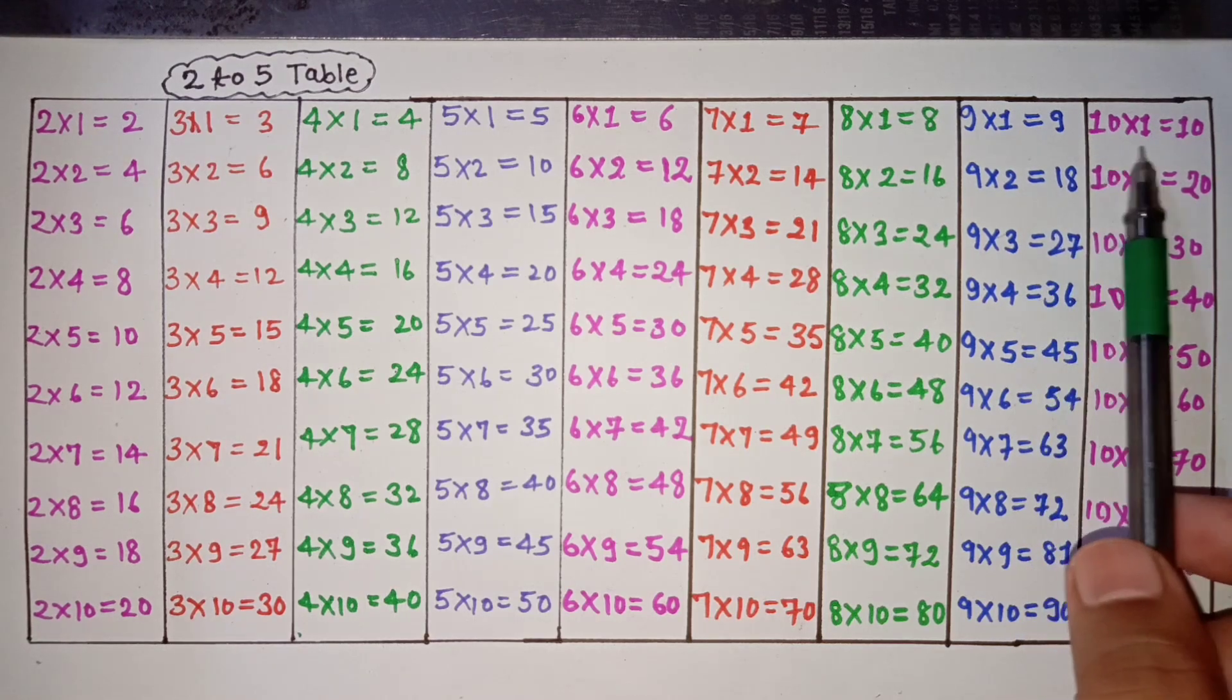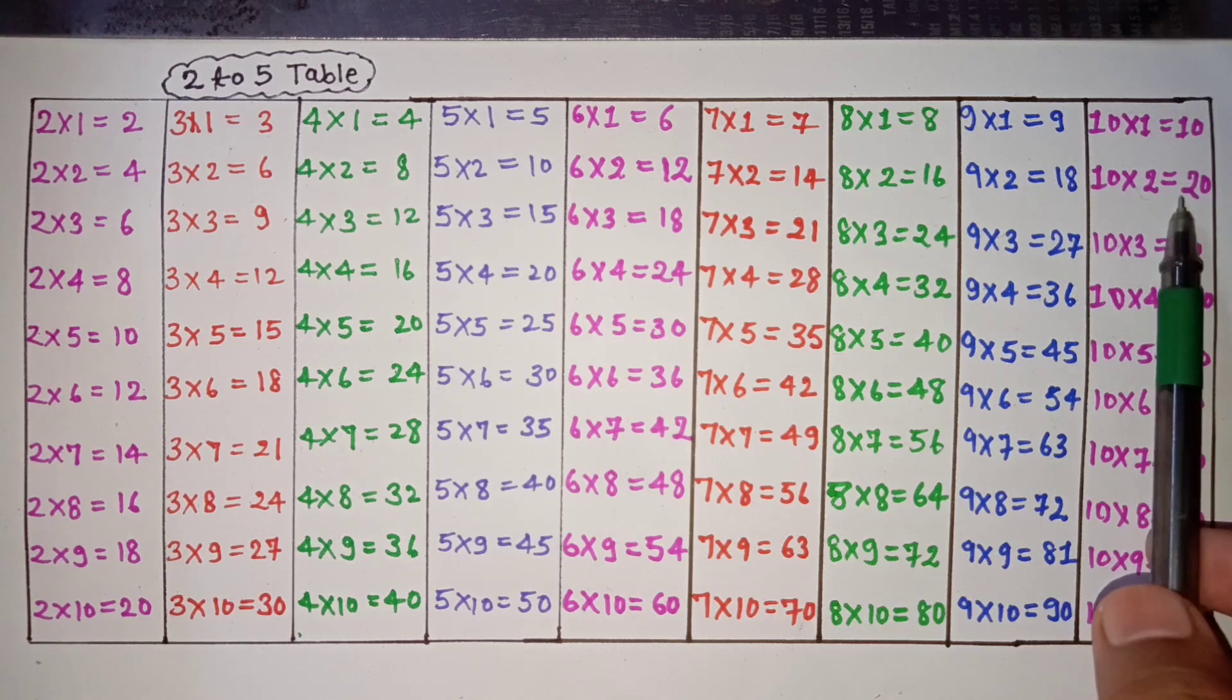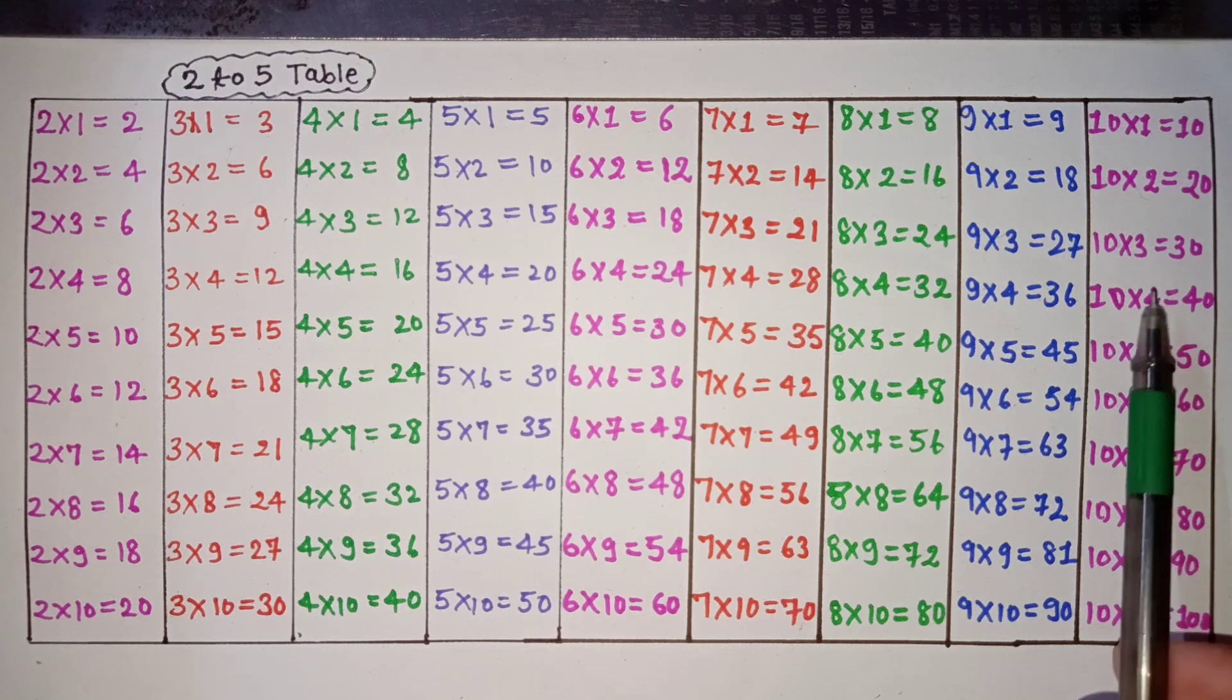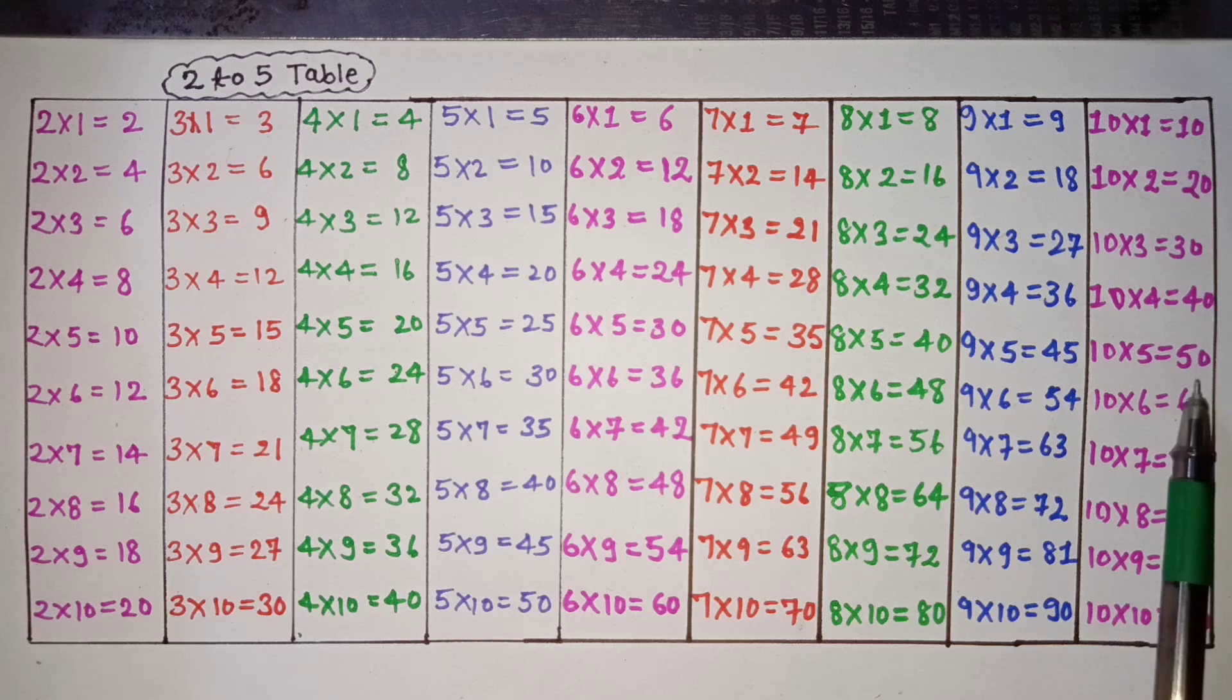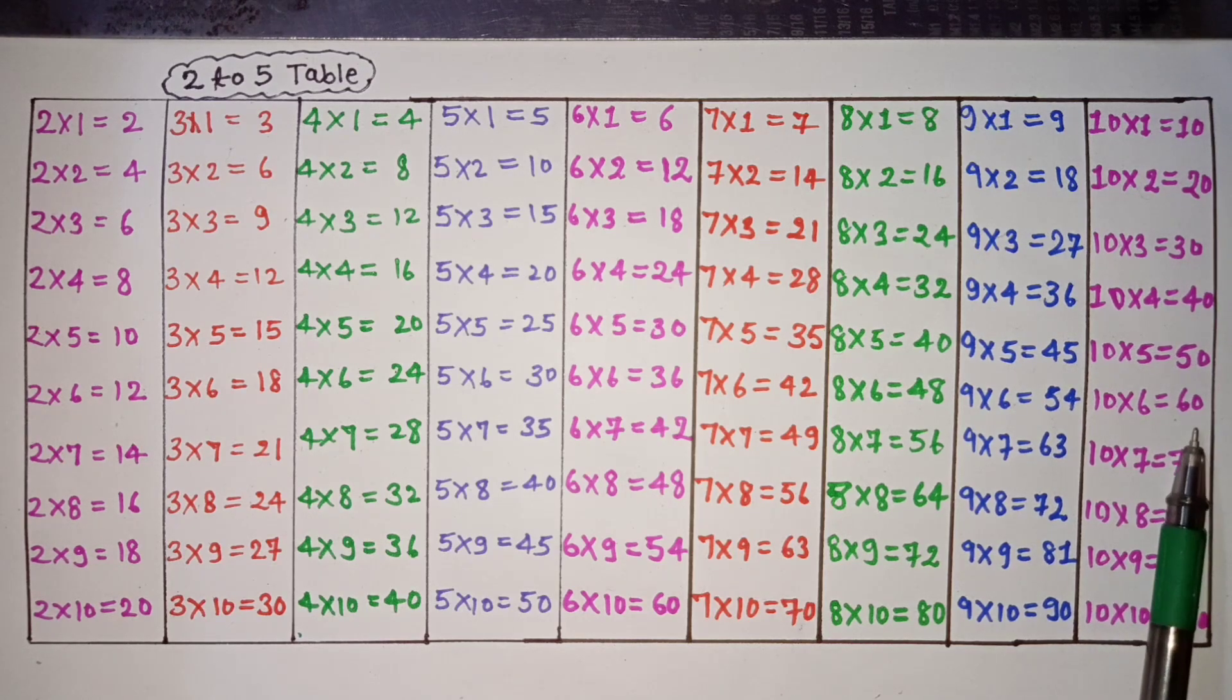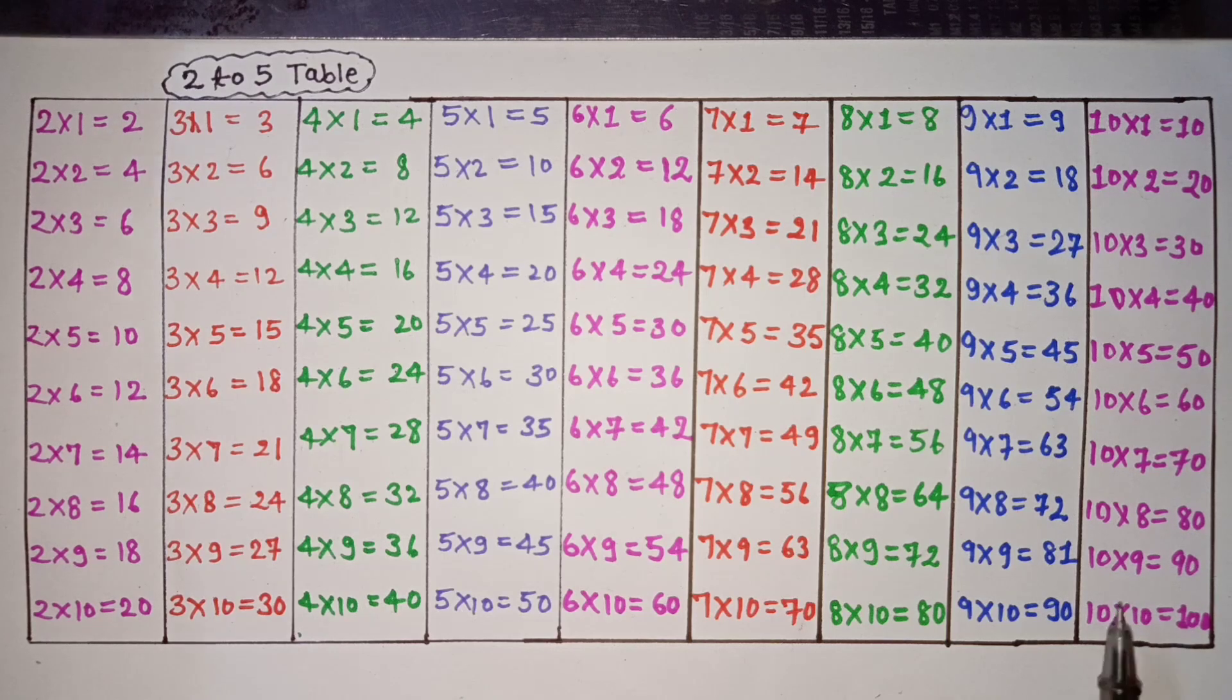10 ones are 10, 10 twos are 20, 10 threes are 30, 10 fours are 40, 10 fives are 50, 10 sixes are 60, 10 sevens are 70, 10 eights are 80, 10 nines are 90, 10 tens are 100. Thank you.